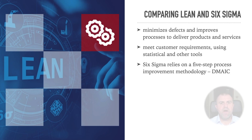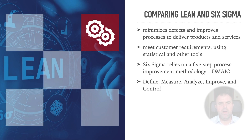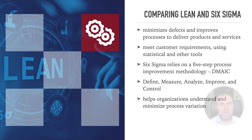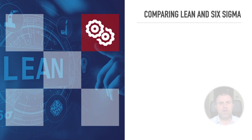Six Sigma relies on a five-step process improvement methodology called DMAIC, which stands for Define, Measure, Analyze, Improve, and Control. This tool helps organizations understand and minimize process variation. Now let's see each component of DMAIC to find out more about it.